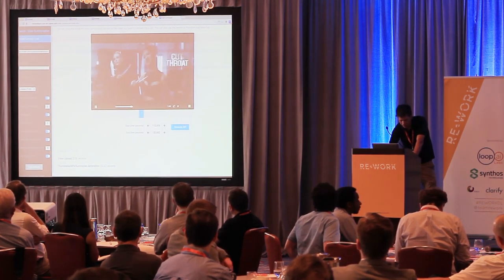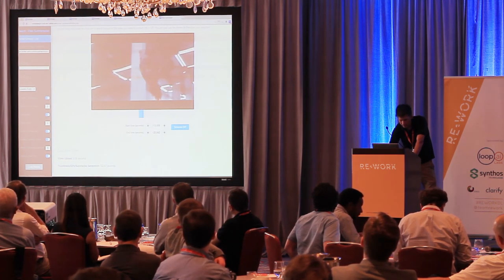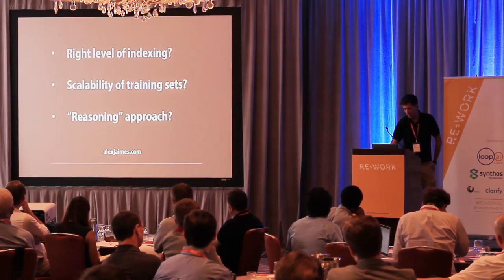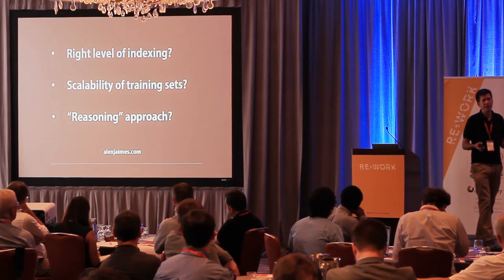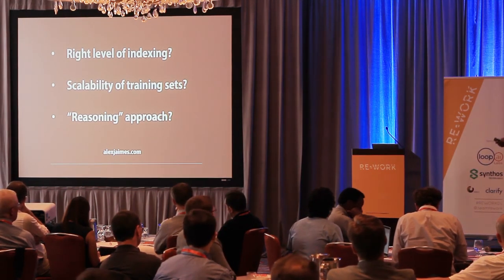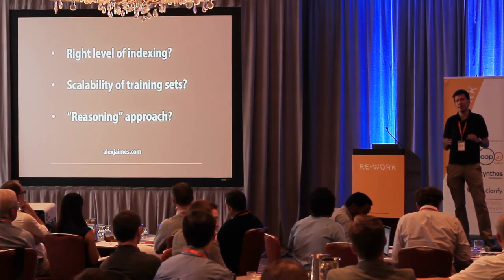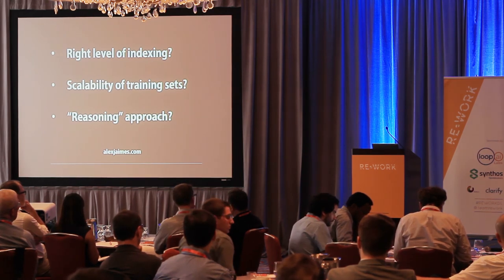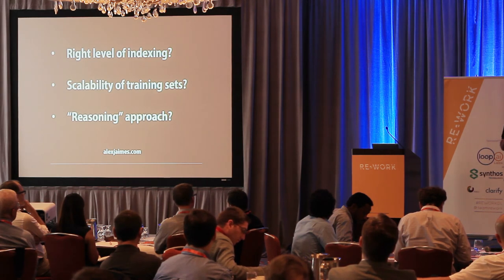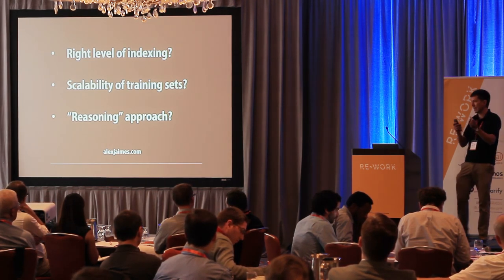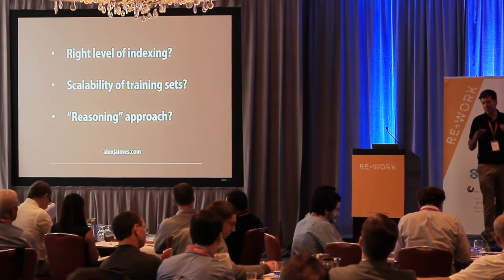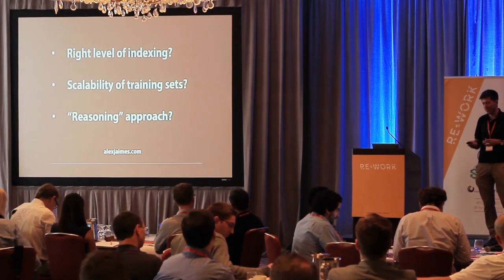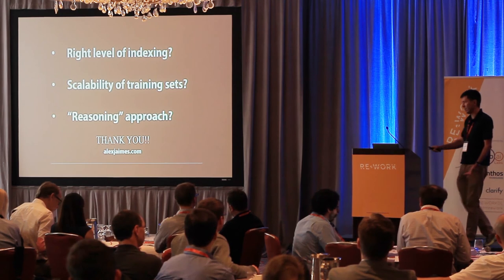To wrap up, the biggest challenges are: the right level of indexing, and the scalability of training sets. When we think about creativity and aesthetics, just finding all the cat images or all the videos of skies or base jumps is not enough — we need additional signals that tell us which are the better ones. That's where social media comes in, using external data to help with scalable training sets. And what is the right reasoning approach? This idea of reasoning is not new, it's been around before, and I think it's going to resurface. Thank you very much. There are papers for a lot of this work — let me know if you have any questions.